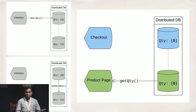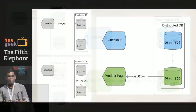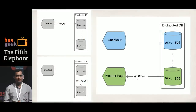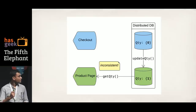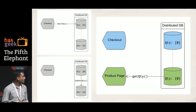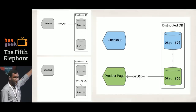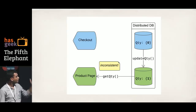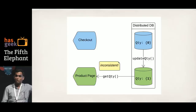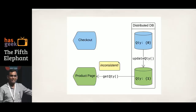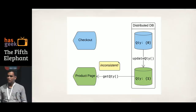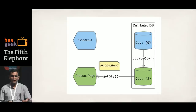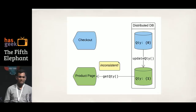When you check out in an e-commerce website, that act of buying the product decrements the quantity and then that is replicated through some replication mechanism to the slave. When a read happens — say a product page displaying remaining quantity, in stock or out of stock — it reads from the slave. The problem is: while the update is still happening, if the quantity has gone to zero but hasn't been replicated, the read is inconsistent. The product page says in stock while there is no stock left.